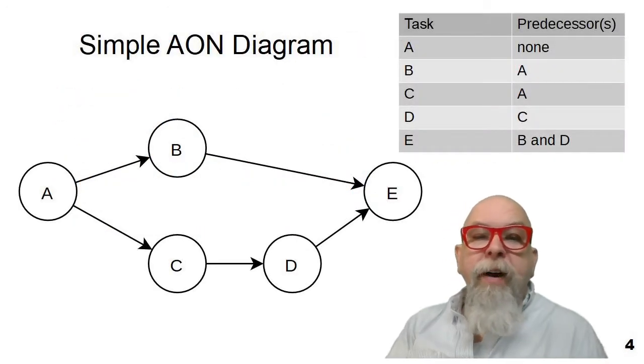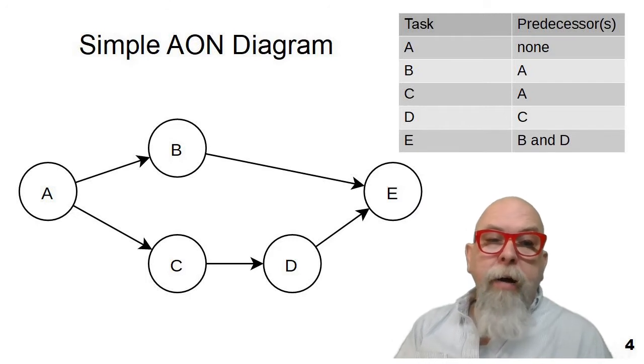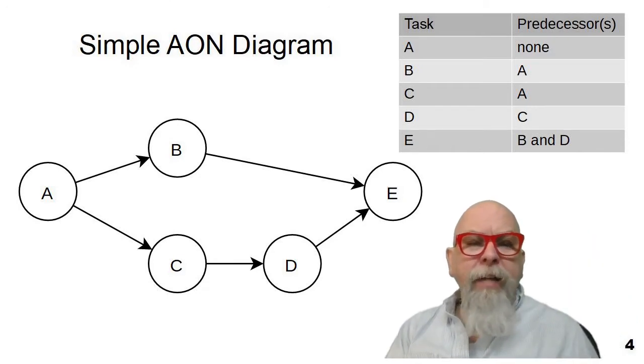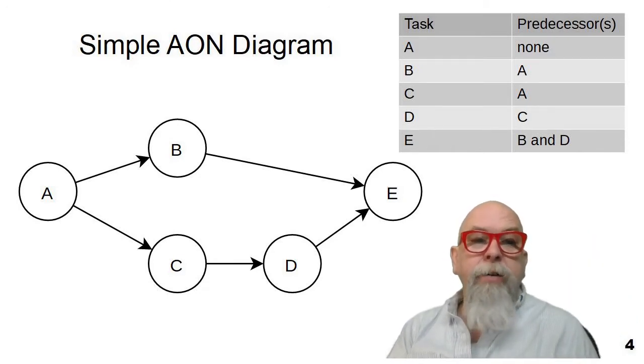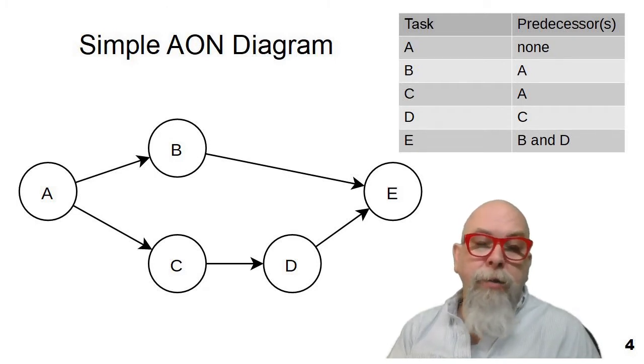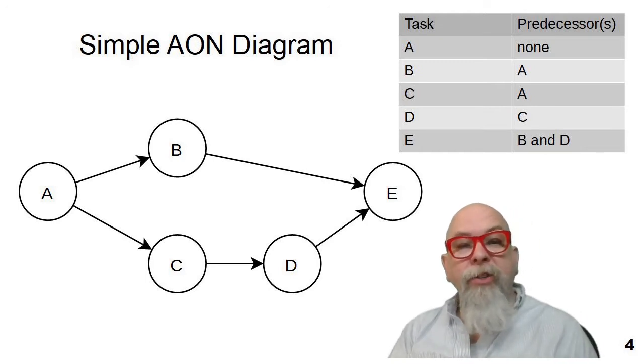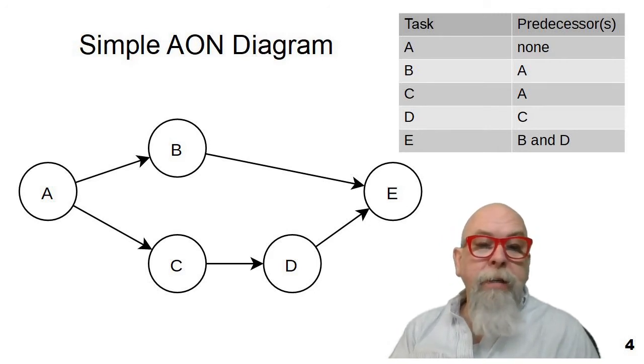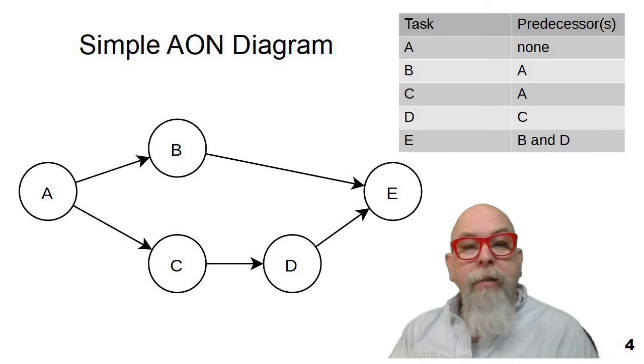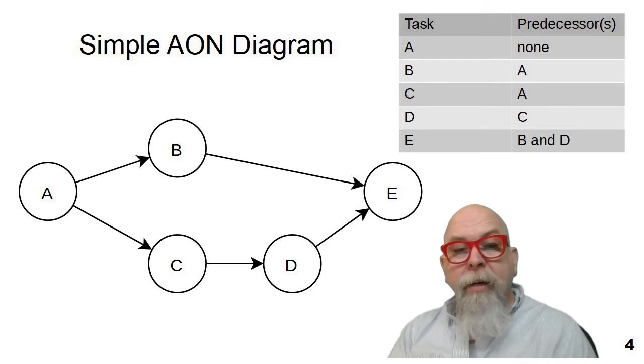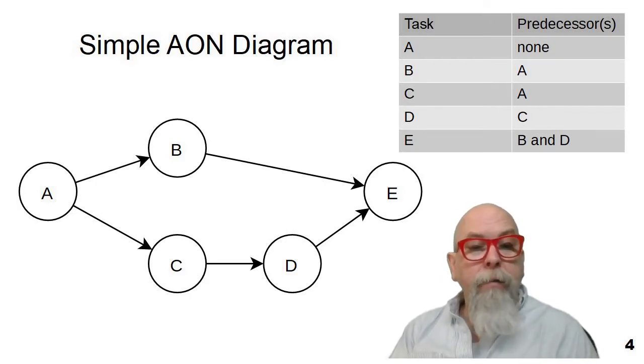Let's start with a very simple Activity on Node diagram. Above my head, you can see that we have a list of five tasks, and I've assigned each task a letter just to make it easy to understand the task. And I've defined the predecessors or prerequisites or tasks that have to be finished before we can start the next task. So you can see that task A has no predecessors and can be started at the beginning of the project. Tasks B and C must wait until task A finishes. Task D follows task C and task E follows task B and D.